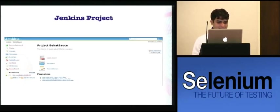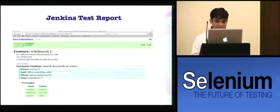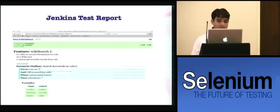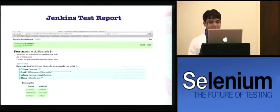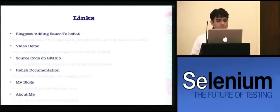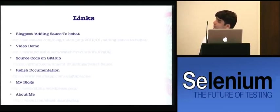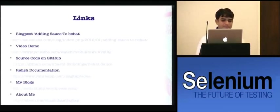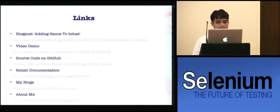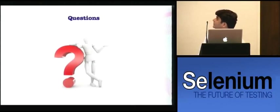Once you build the project, Jenkins will run the feature files defined and produce test reports. If all scenarios passed, the test reports will look like this — they are fairly readable and written in plain English. There are some links for this demonstration if you wish to see a video demonstration of this presentation. You can also find the source code on GitHub, and the Behat documentation is available online.